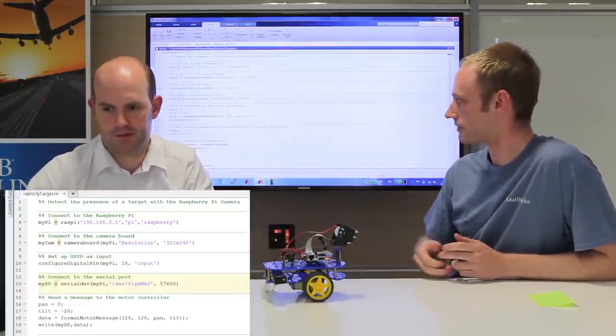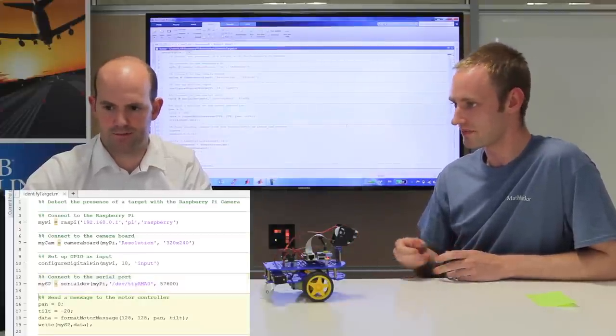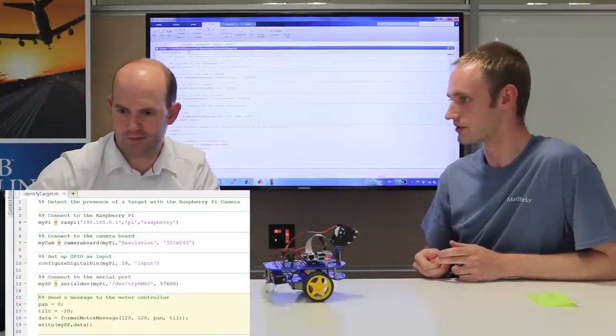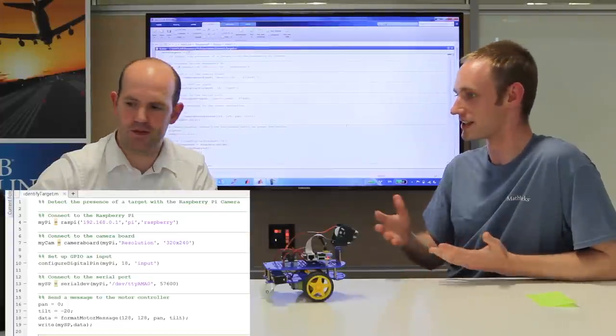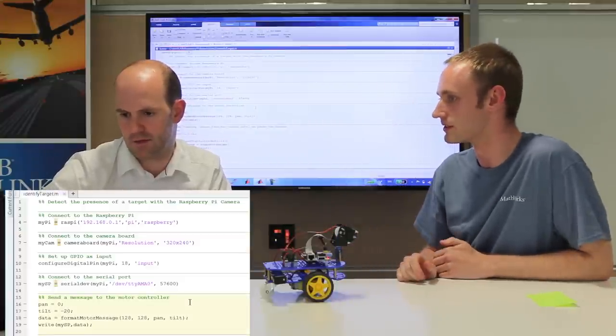And then the serial port which is connected to the motor controller, and if you just run the next little block of code there, that will send a signal to the motor controller. But actually because the camera's already pointing in that direction, nothing happens. So if you just go back to that section of code to see where tilt equals minus 20, if you just change that to, I don't know, minus 40.